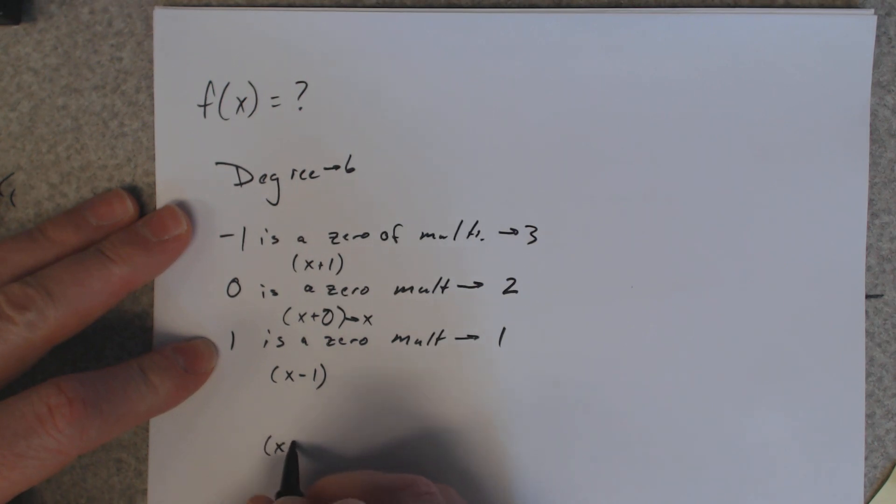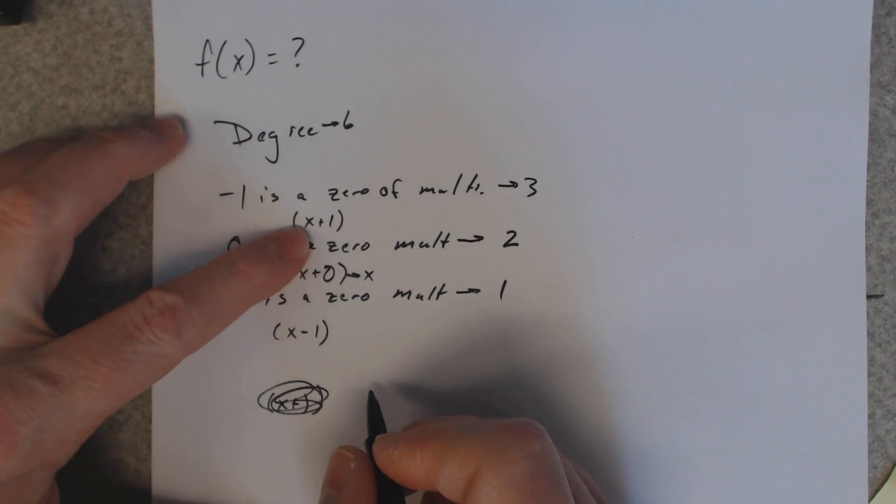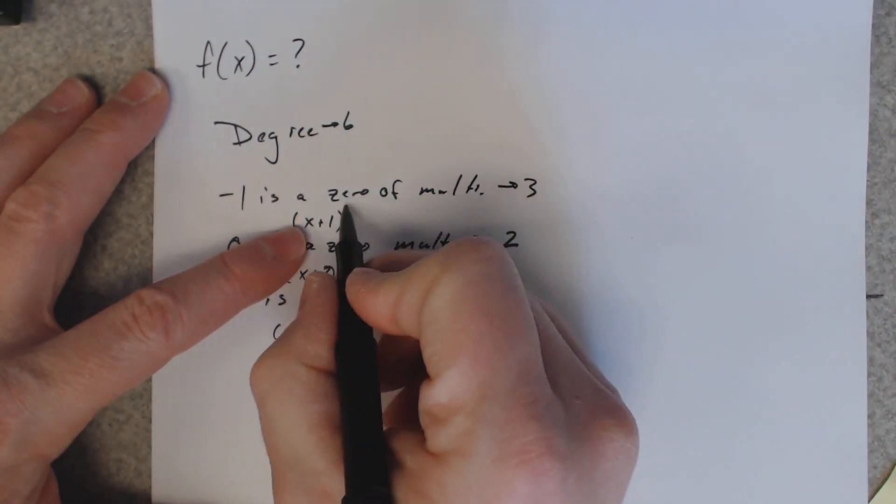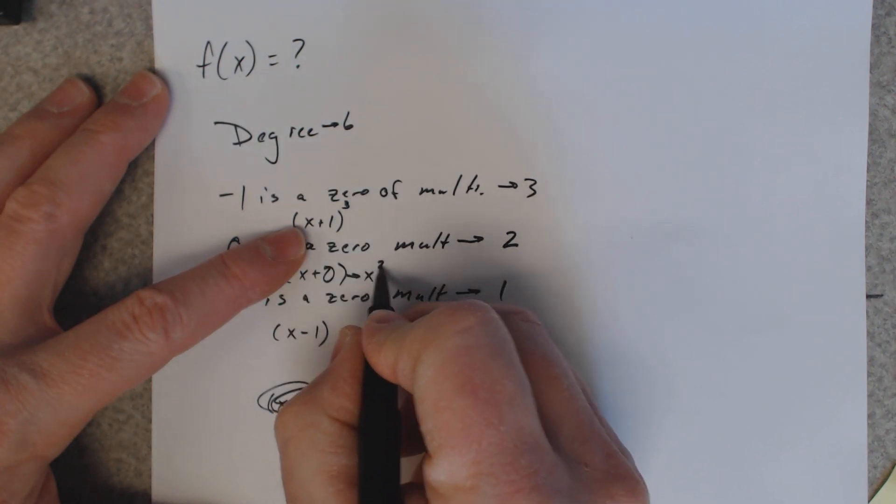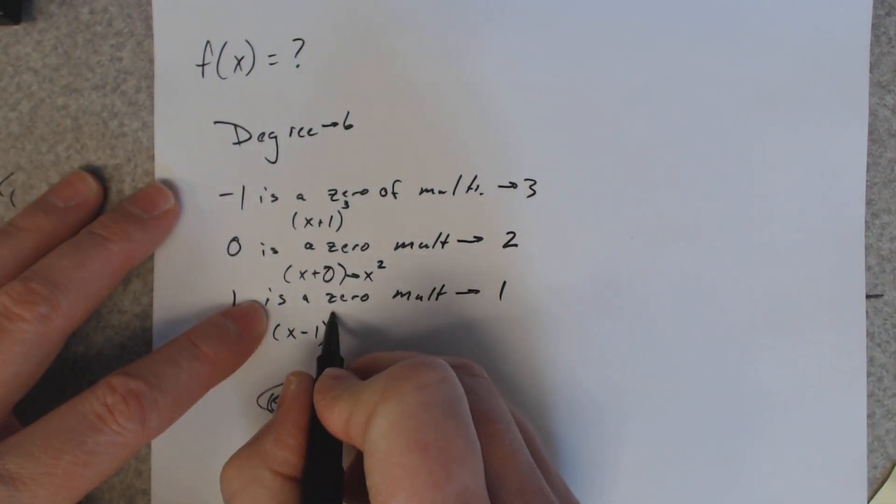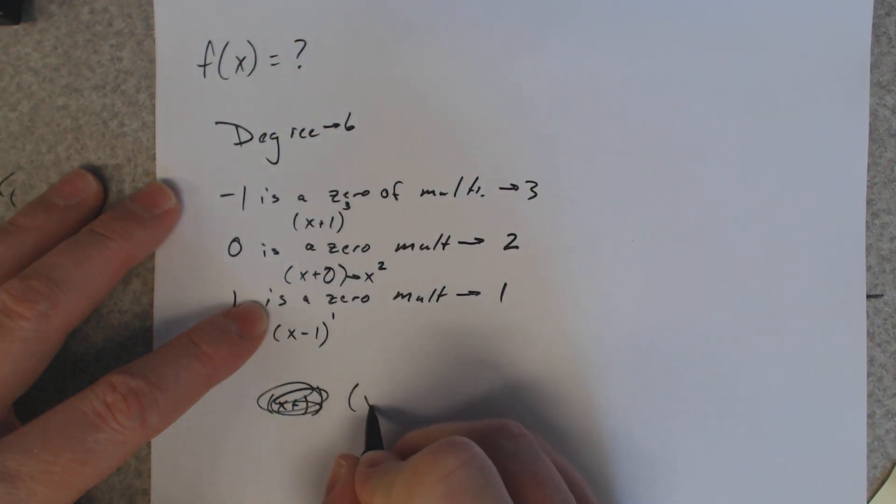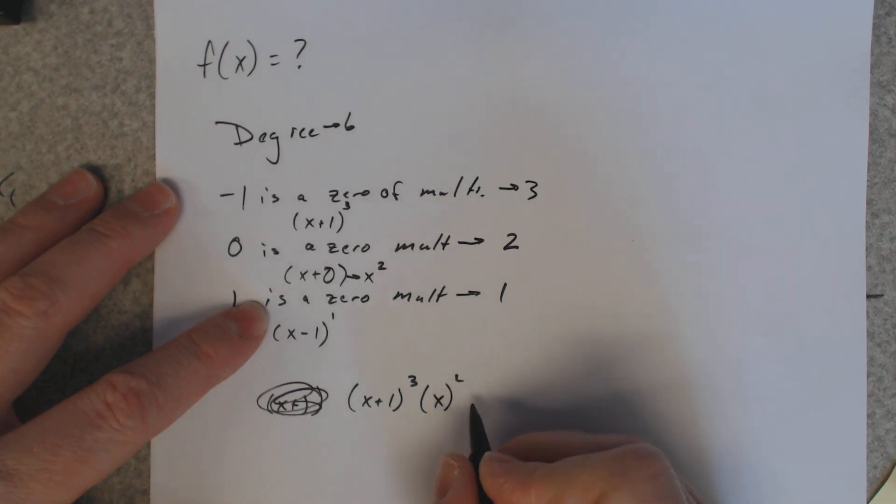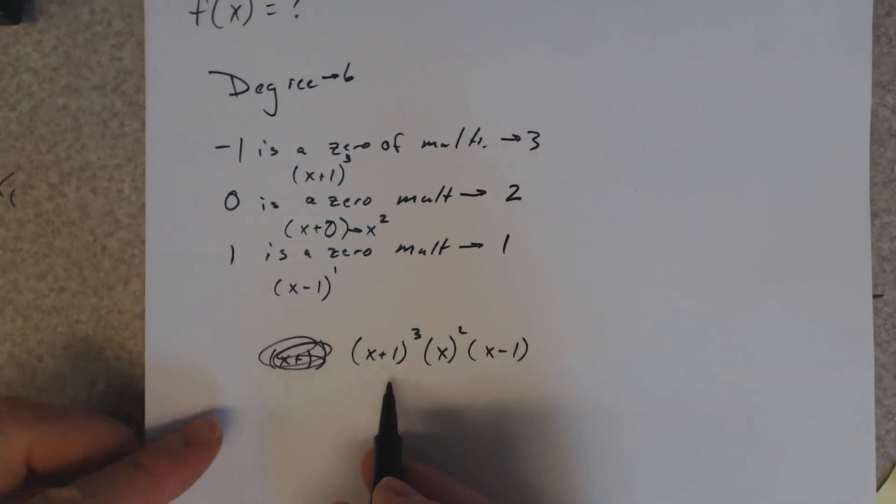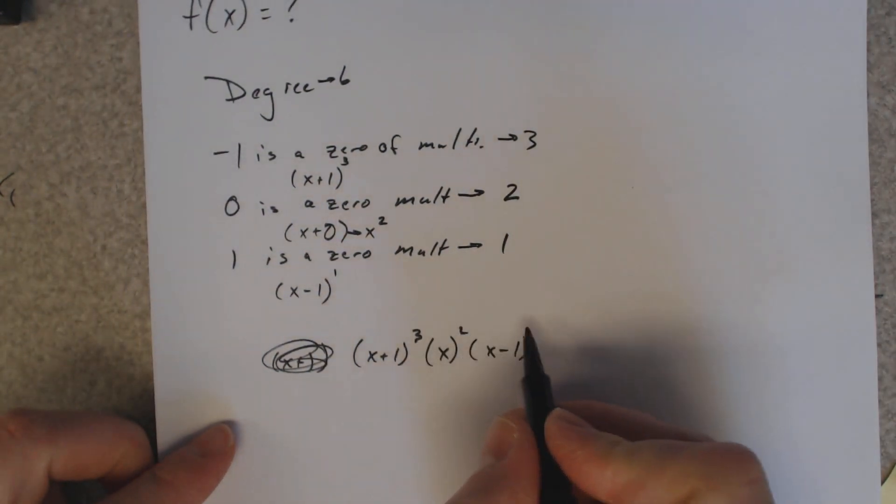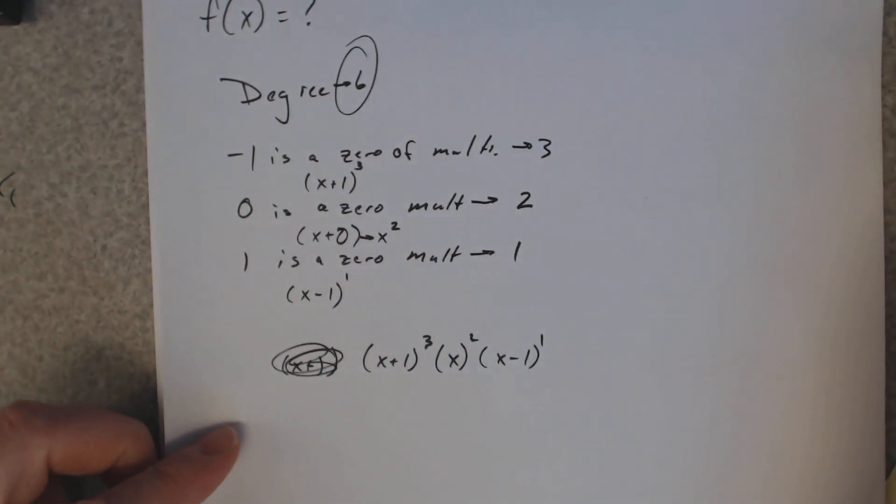All right, so here's what we know so far. We've got x plus 1. Oh wait, the multiplicities. Here's 3, so you better put a power of 3 on that. The multiplicity here is 2, so we're going to put a power of 2 on that. And then the multiplicity is 1, so you put a power of 1 on there. So we've got x plus 1 cubed times x squared times x minus 1 to the first. I just don't write anything down there. And you get 3 plus 2 plus 1 makes 6. That's your degree, 6.